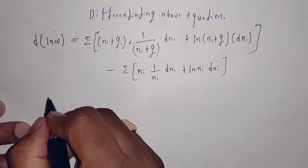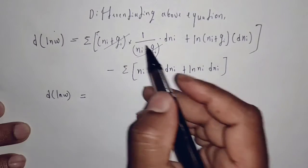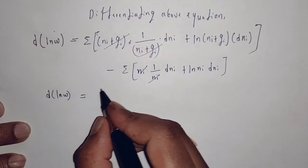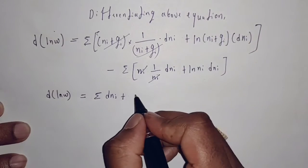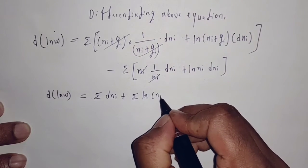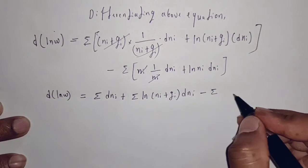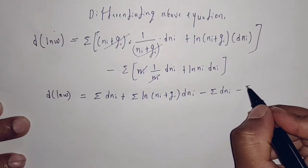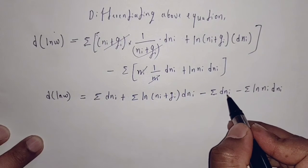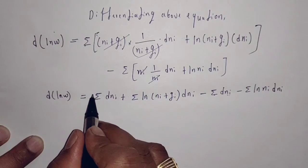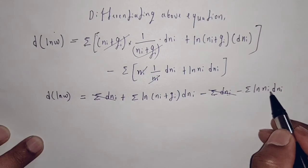Rearranging terms: (ni + gi)/(ni + gi) cancels to 1, and ni/ni cancels to 1. After cancellation, we get: d(ln W) = summation of ln(ni + gi)·d(ni) minus summation of ln(ni)·d(ni).